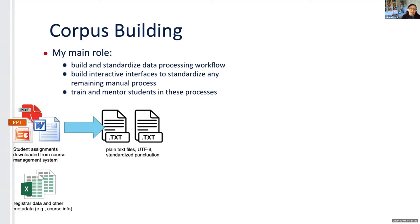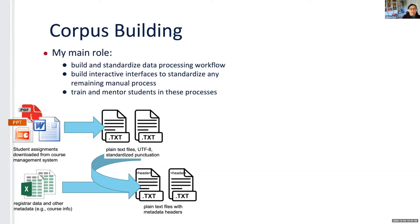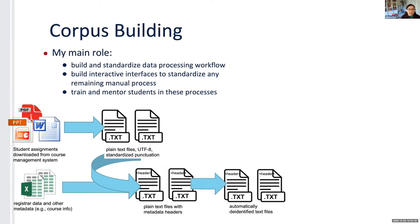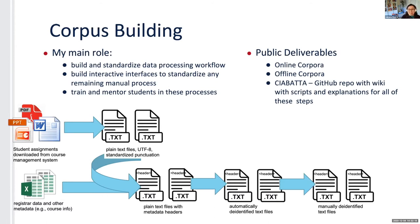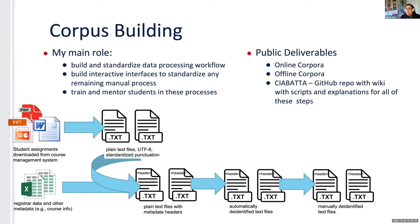We start with all types of files — PDFs, Word documents, PowerPoint presentations — which are student assignments. We also have information about the students like register data and quality surveys. The first Python script I created ensures all files are encoded in UTF-8. We also attempt to fix punctuation for machine readability, then add metadata to each individual text file, which is also used to automatically de-identify texts. Since these will be shared publicly, the final step is to manually de-identify texts containing personal information not in the metadata, like names of family members. I created an interactive interface for this manual process to minimize human error.